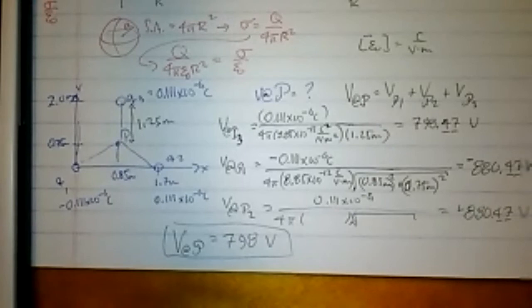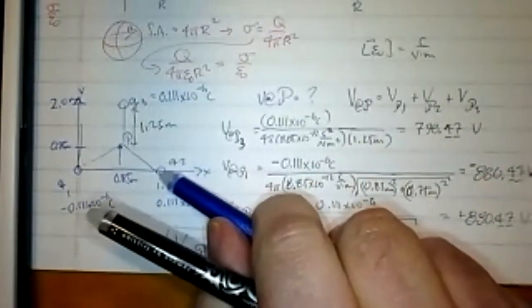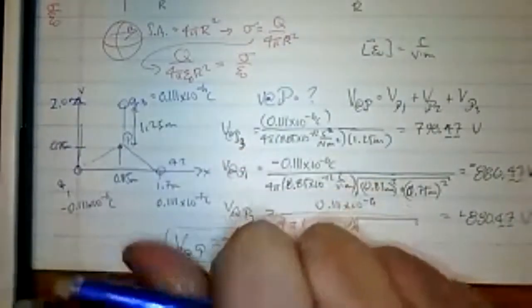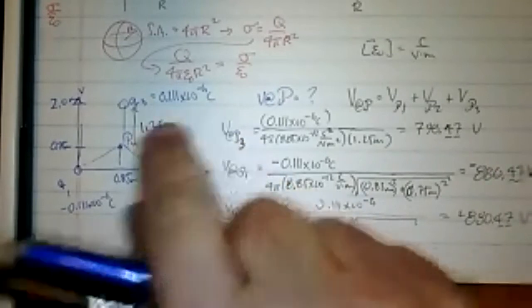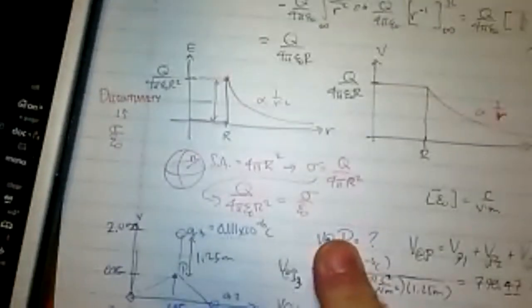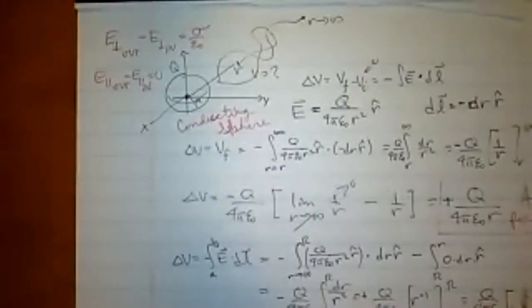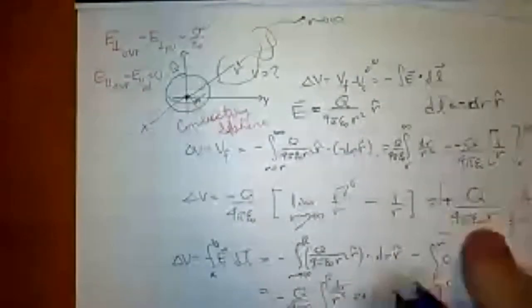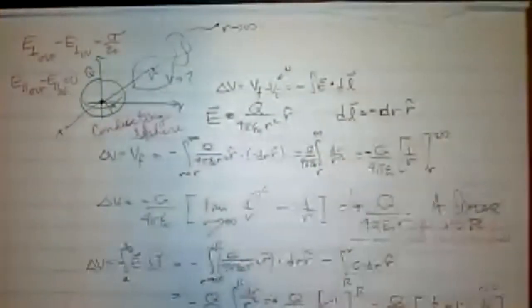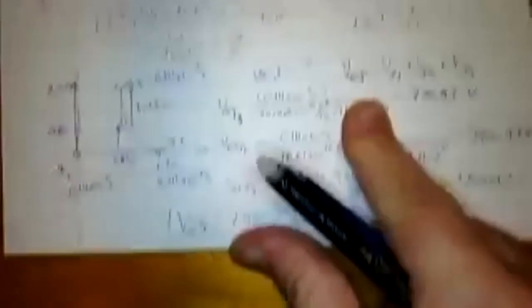Why can we use Q/(4πε₀r) for point charges? A point particle behaves exactly like a uniformly charged sphere of any radius. We worked out the voltage for a finite sphere of radius R with total charge Q and found Q/(4πε₀r). So that's the voltage of either a point charge or any spherically distributed charge distribution Q.